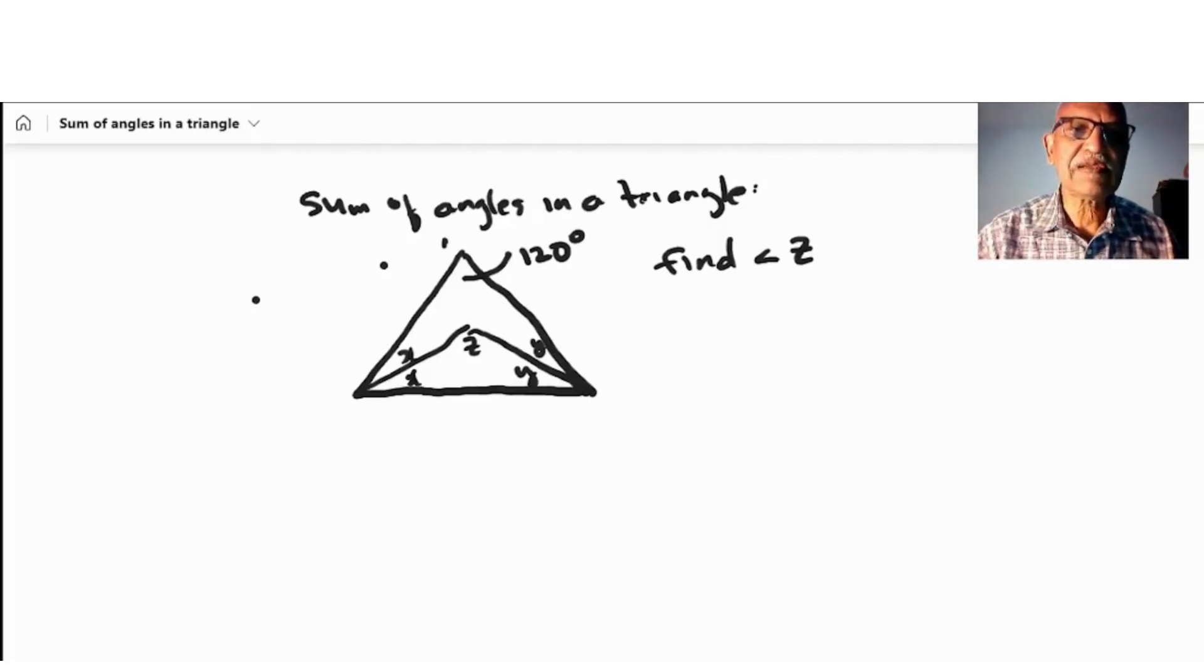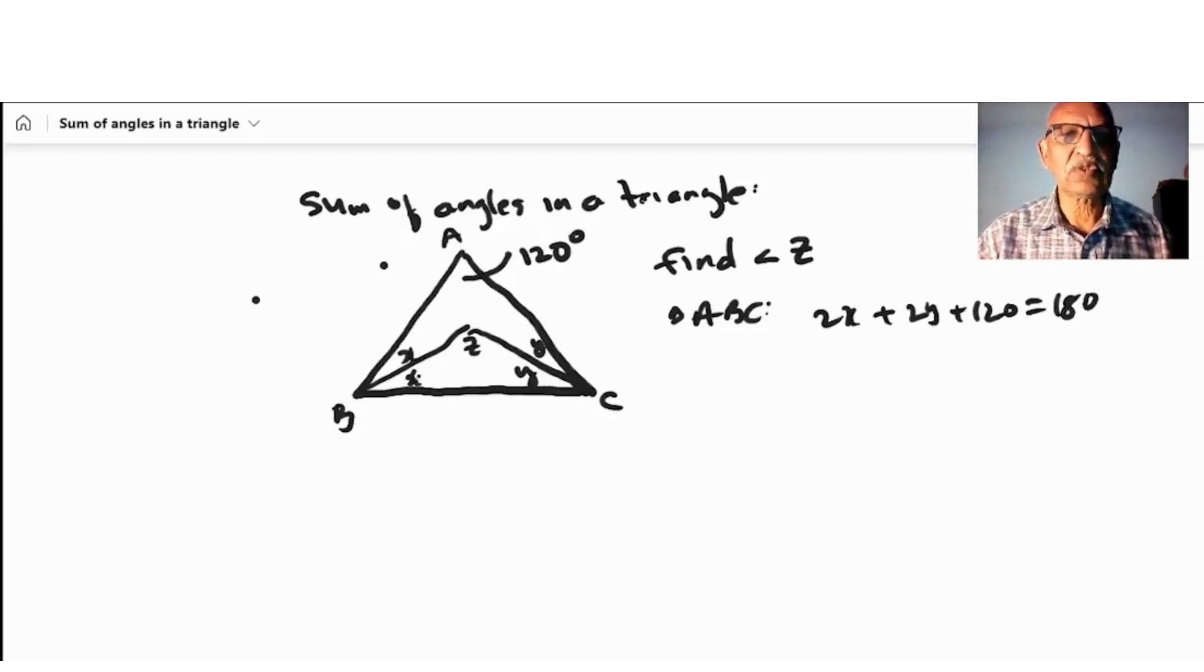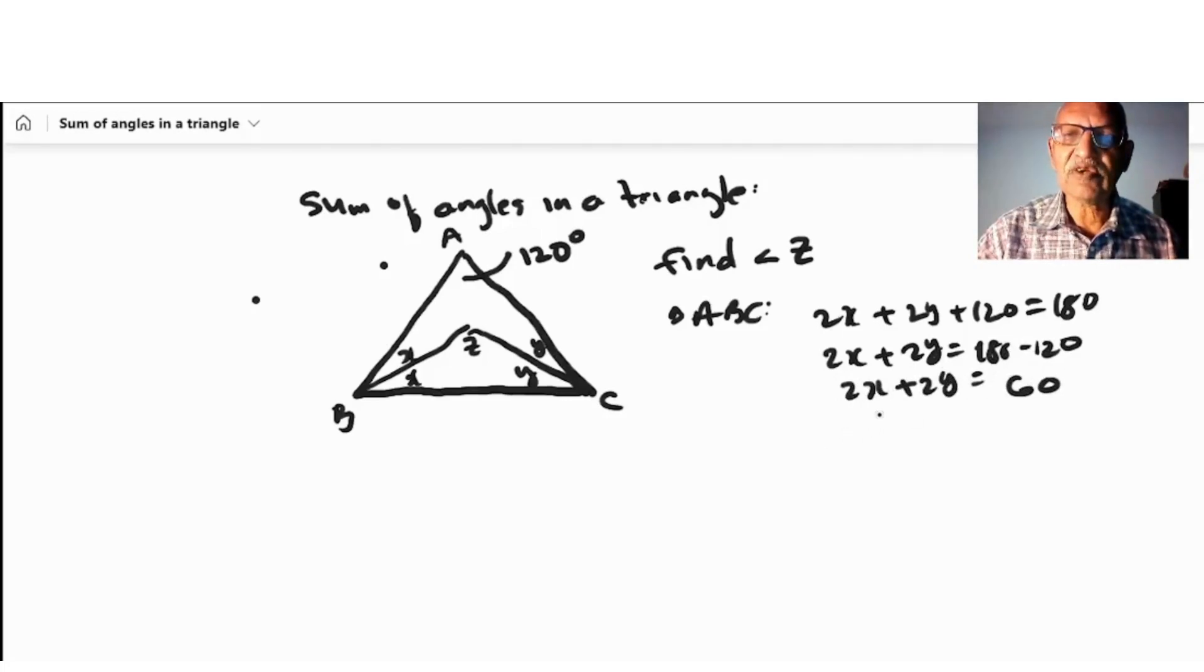So in this question here, if this is triangle ABC, okay, so what we know now is this triangle ABC. In triangle ABC, 2x plus 2y plus 120 is 180 degrees. Therefore, 2x plus 2y equals 180 minus 120. 2x plus 2y equal to 60. I divide all by 2: x plus y equal to 30. So I know x plus y equal to 30.